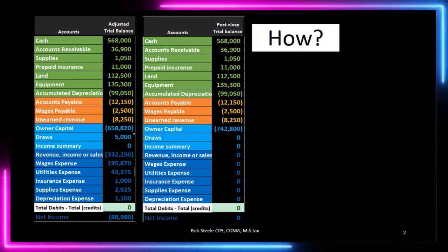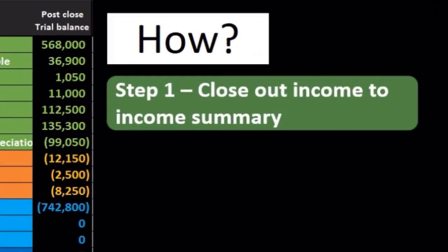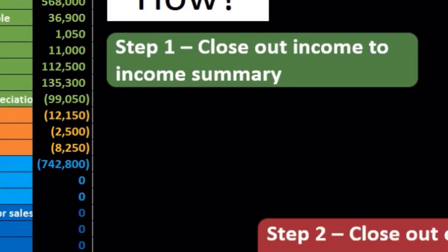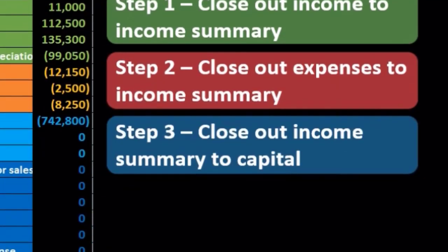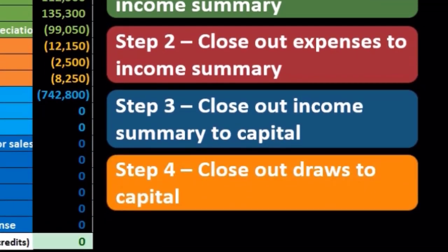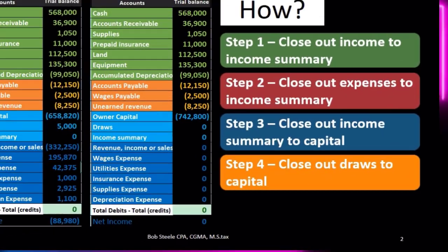We're going to do that with a four-step process. In the past we did step one: close out income to the income summary. Then step two: we closed out the expenses to the income summary. Then step three: we closed out the income summary — that temporary account now having net income in it — to the capital account. Now we're doing that last step, which is to close the draws out to the capital account.